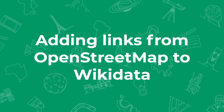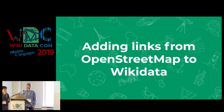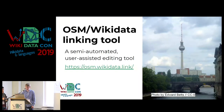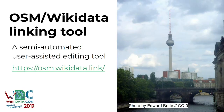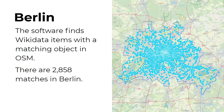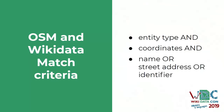I'm going to talk about the process for adding links from OpenStreetMap to Wikidata. I've written a tool for automating this process — it's user-assisted editing, not fully automated. When I run the tool on Berlin, it finds 2,800 matches — these are Wikidata items where it thinks it has found the same OpenStreetMap object. The matcher uses this criteria: it looks for things that are the same entity type, have the same coordinates, and either the same name, street address, or identifier.